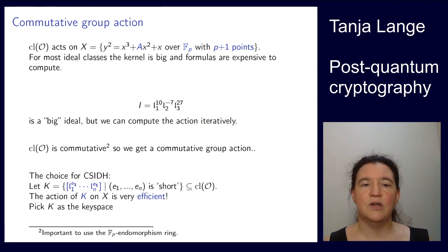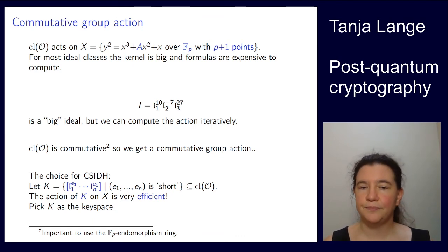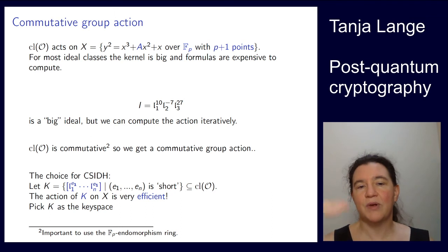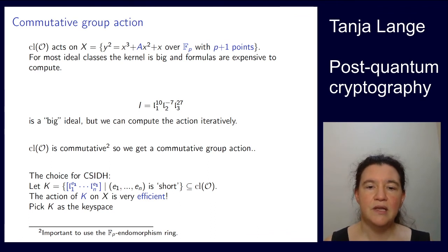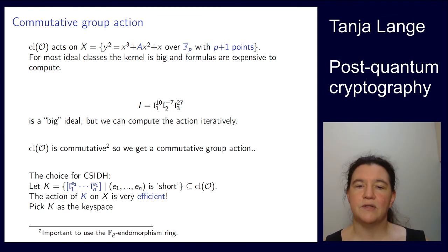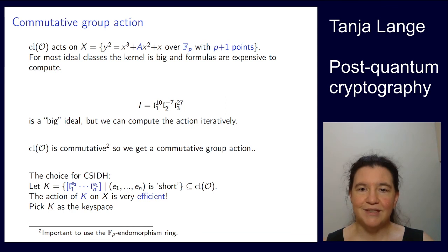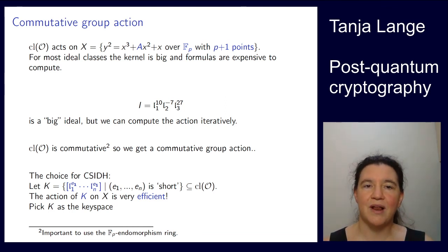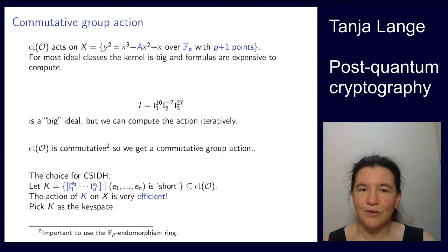What we're doing in CSIDH is looking at a key space where we predefine some primes L_1 to L_n, then look at the ideal classes above those primes, accepting positive and negative exponents in some interval. Note: there's a typo — the last one should be E_n rather than E_1. This is our key space, and the set of elements that acts on it is a subset of this class group. This was a big blast of mathematics — stay tuned for the next lecture which has all the operational details.